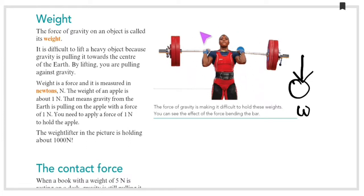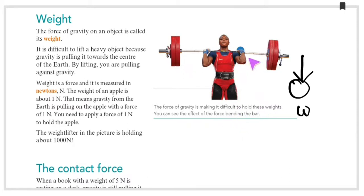Here you can see a weight lifter. She is lifting the weight. The force of gravity is making it very difficult to hold the weight. You can see the effect of this force bending the bar, because there is a force of attraction towards the center of the Earth.